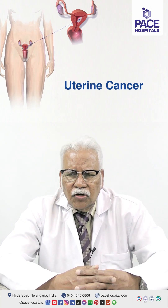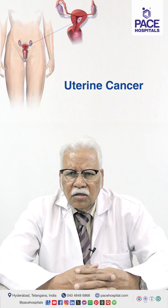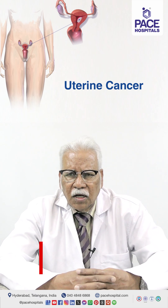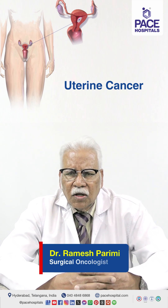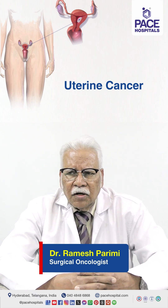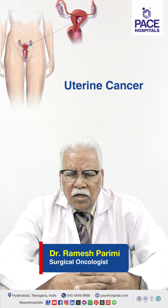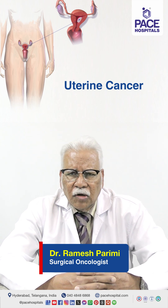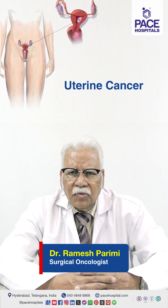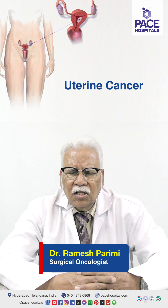The uterus is an organ in the female body located in the lower abdomen, in the region called the pelvis. This uterus is very essential for a woman to menstruate and also to bear children. In Telugu it is called garbasanchi and in Hindi they call it achatani.